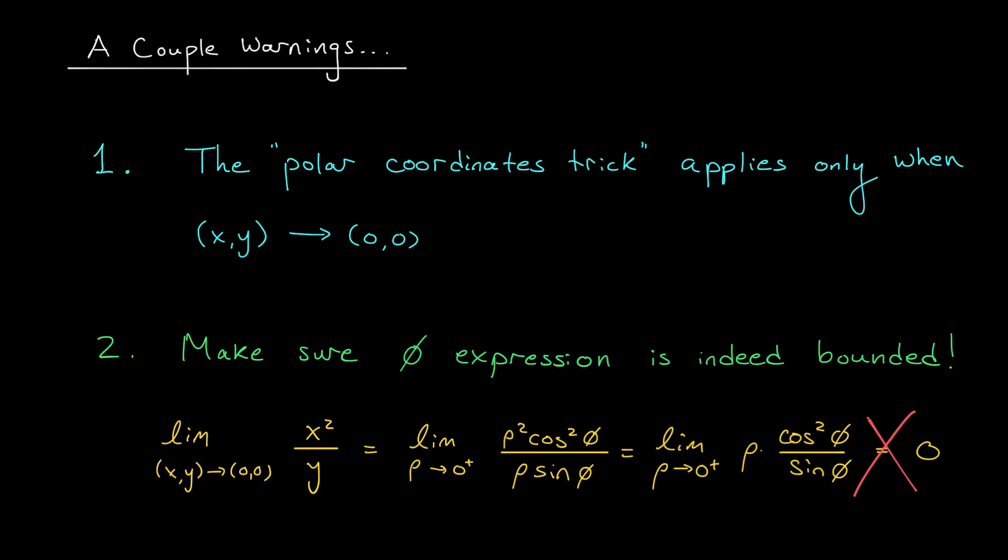If we approach the origin along a path where our terms sin φ get really, really close to 0, well, then this expression is going to blow up to infinity. Our limit would then be of the form 0 times infinity, which is indeterminate. In fact, this limit is not equal to 0. The limit doesn't exist. I'll leave it as an exercise for you to show that that's the case.